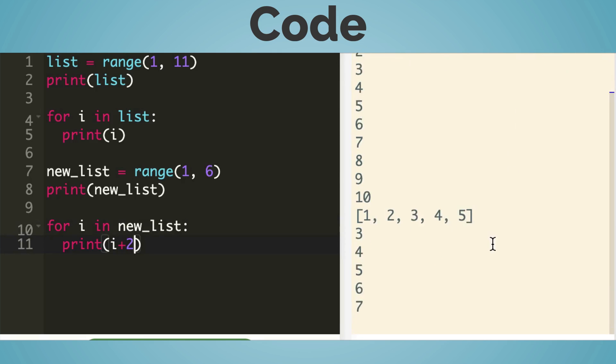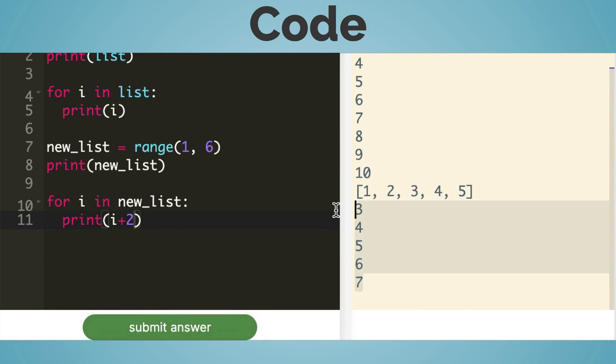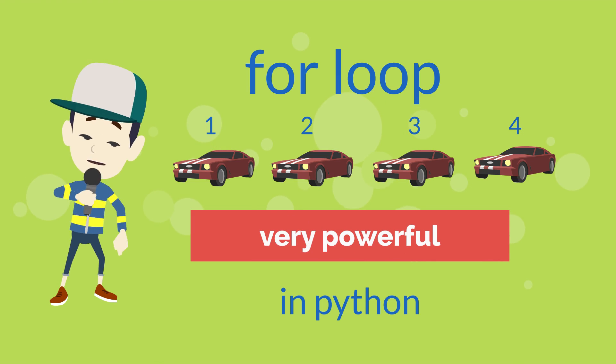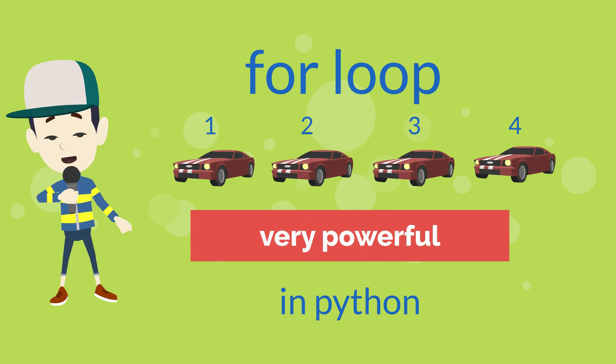Print i plus 2. Oh, I got 3 to 7 in the output. For loop is very powerful in Python.